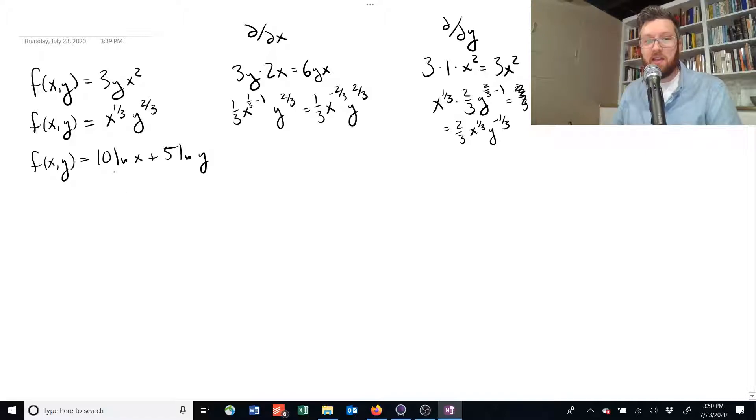Lastly, let's do this guy. This one has natural logs, but it's actually pretty simple because the x's and y's don't interact except additively. So if we take the derivative with respect to x, the first term is 10 times the derivative of natural log of x, which is 1 over x.